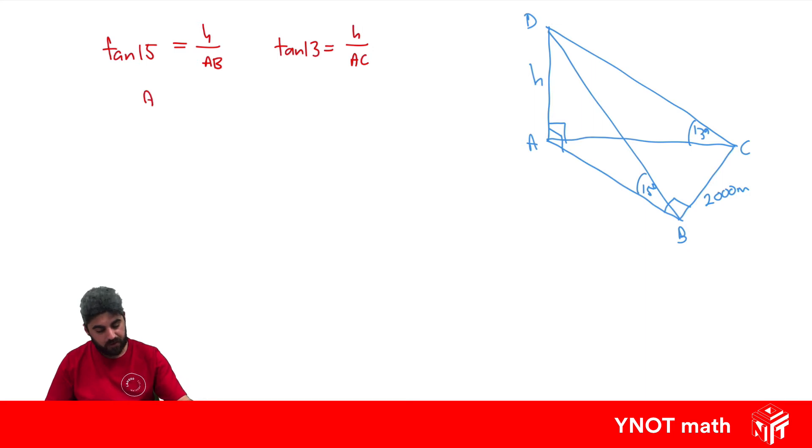If we make AB the subject here we'll get H over tan 15, and if we make AC the subject we'll get AC equals H over tan 13.